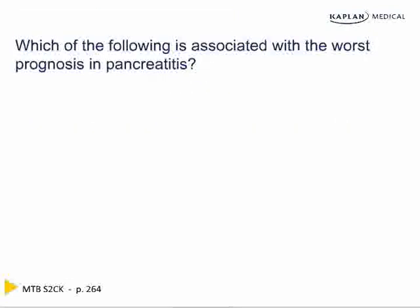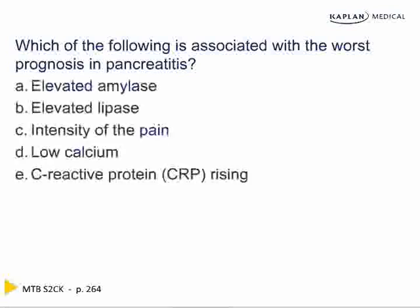Which of the following is associated with the worst prognosis in pancreatitis? Is it an elevated amylase, an elevated lipase, the intensity of the pain, low calcium, or a rising C-reactive protein? If you chose D, low calcium, you are correct.